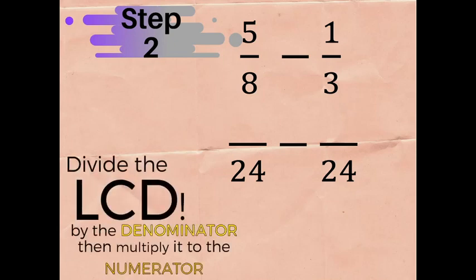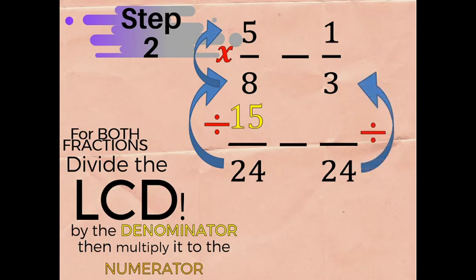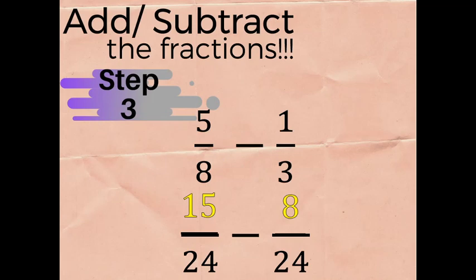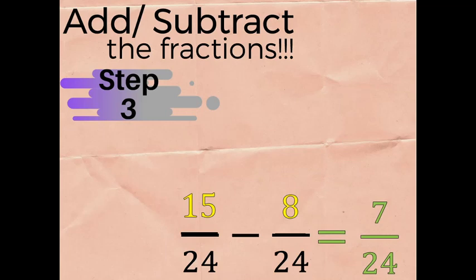We divide the LCD by the denominator then multiply it to the numerator — that forms the wings of the butterfly. So 24 divided by 8 is 3, times 5 equals 15. On the other side, 24 divided by 3 gives us 8, times 1 gives us 8. Step three: since the operation is subtraction, we subtract 15 minus 8, which equals 7 over 24.